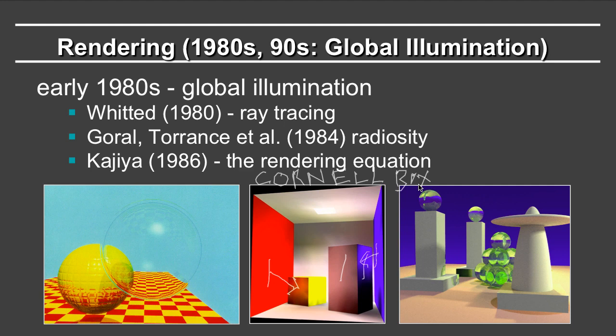Kajiya in 1986 introduced something known as the rendering equation — a unified way to deal with many visual phenomena such as ray tracing or radiosity. He produced a beautiful image where all the color comes from caustics from the green balls and inter-reflections between objects, while all other objects are neutral gray. This unified framework was a landmark, and much of the work in the 80s and 90s involved various ways to solve the rendering equation. The challenge of global illumination — light from everywhere in the scene — remains a challenge to the current day.